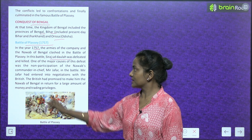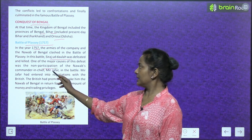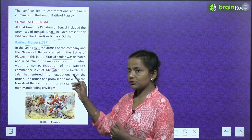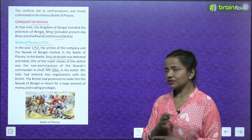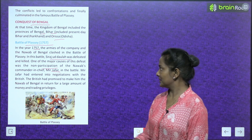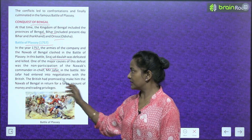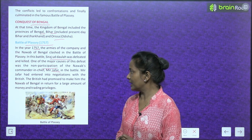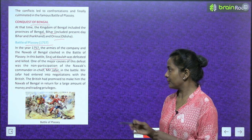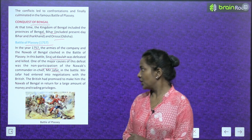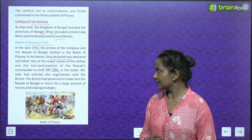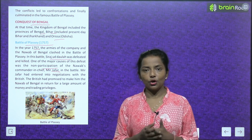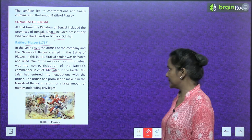One of the major causes of Sirajud Daulah's defeat was the non-participation of the Nawab's commander-in-chief Mir Jafar in the battle. Mir Jafar had entered into negotiations with the British. The British had promised to make him the Nawab of Bengal in return for a large amount of money and trading privileges. See, this is the Battle of Plassey.